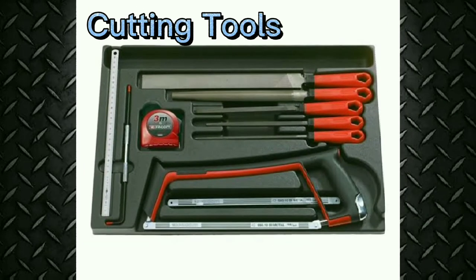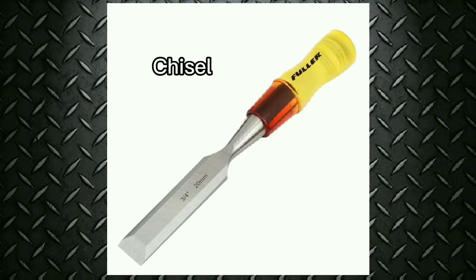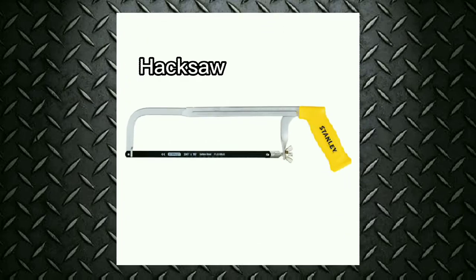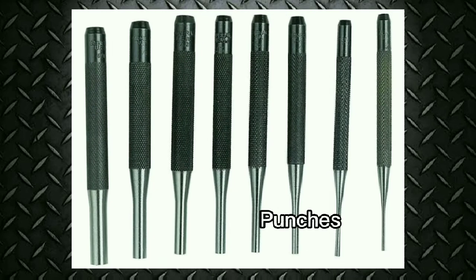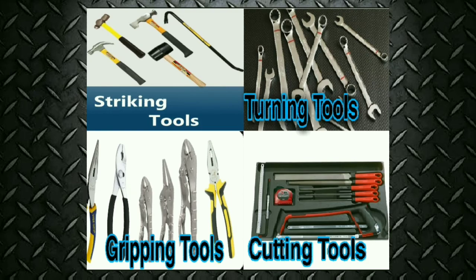Cutting tools remove metal. They include chisels, hacksaw, files, and punches. The chisel is a cutting tool with a single cutting edge, available in various sizes and shapes. A hacksaw is an adjustable metal frame that holds a steel saw blade. Files are used for cutting and shaping metal and have many cutting edges or teeth. Punches are used to knock out rivets and pins and also line up parts for assembly — to remove a rivet, grind off the head or cut it off with a chisel, then use a starting punch and pin punch. Those are the four types of shop hand tools: striking, turning, gripping, and cutting tools.